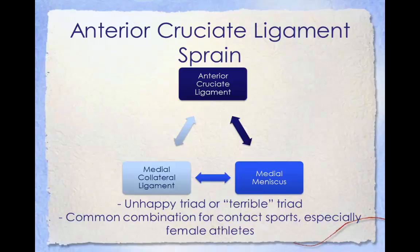An unhappy triad, or terrible triad, is a complete or partial tear of the anterior cruciate ligament, medial collateral ligament, and medial meniscus — all resulting from one single knee injury. Originally the unhappy triad included the medial meniscus; however, more recent research has indicated that the classic unhappy triad is actually an unusual clinical entity among athletes with knee injuries, and that lateral meniscus tears are more common than medial meniscus tears in conjunction with ACL sprains.